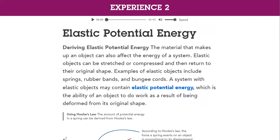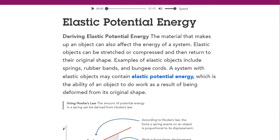Then we have elastic potential energy. The material that makes up an object can affect the energy of the system. Elastic objects can be stretched or compressed and then return to their original shape, like springs. We already discussed spring force before.